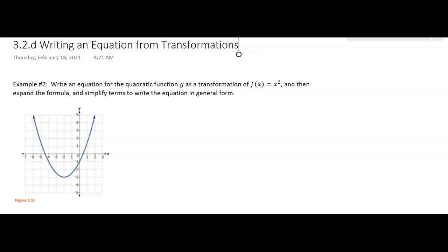It says write an equation for the quadratic function g, which they don't have labeled, but this is g. It's a transformation of that toolkit function, the quadratic function. And then they want us to expand the formula and simplify terms to write it in general form. So we're going to start out with it in standard form.